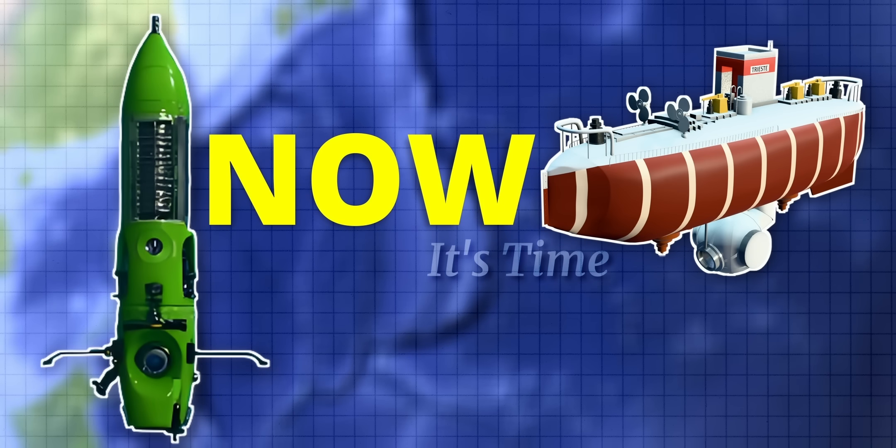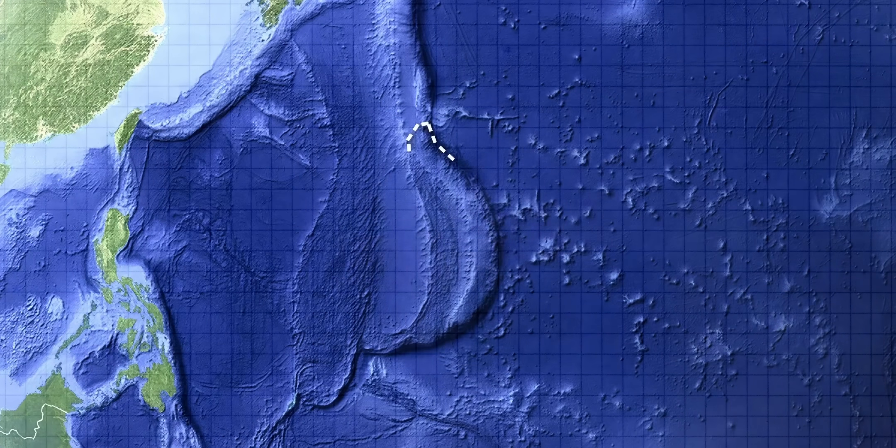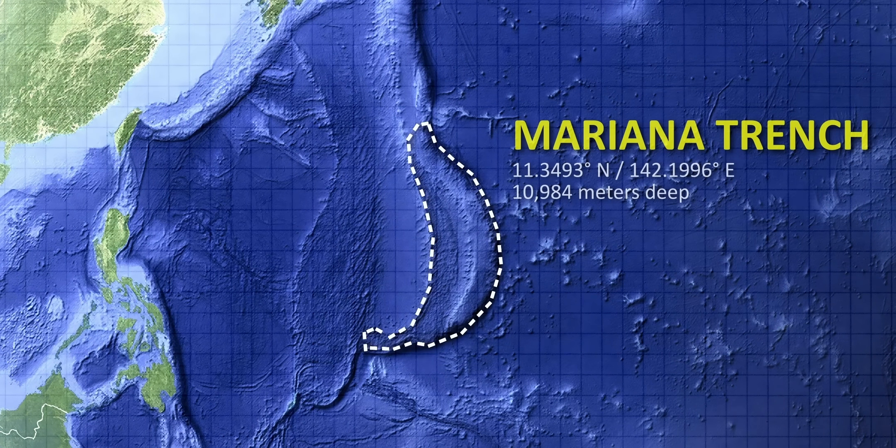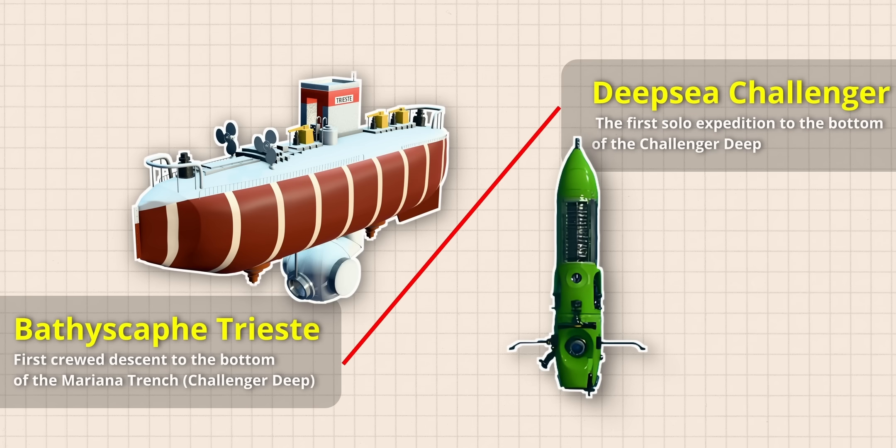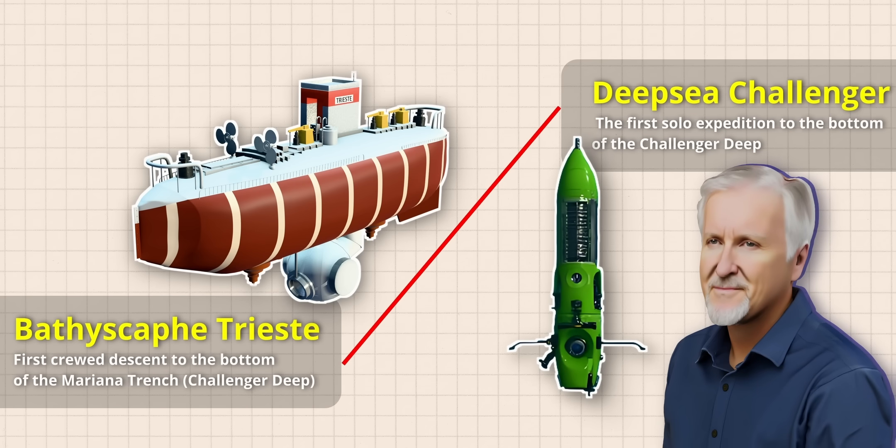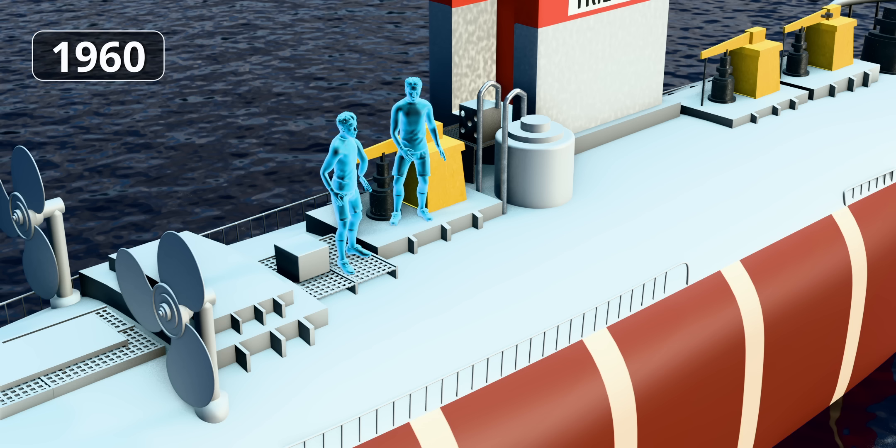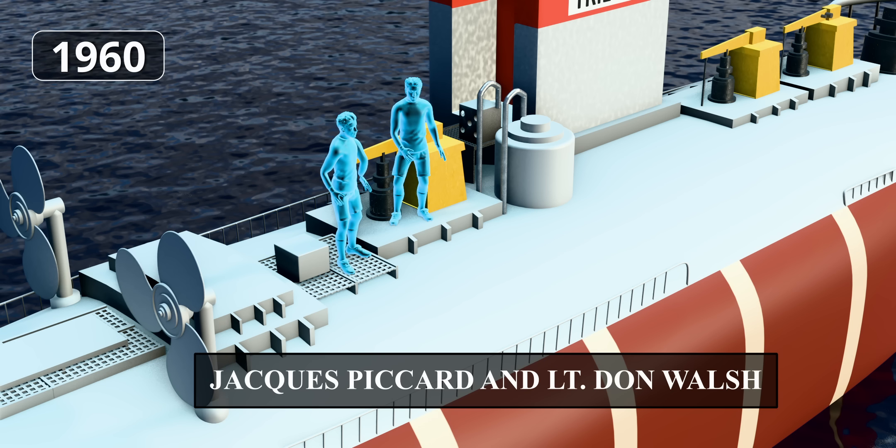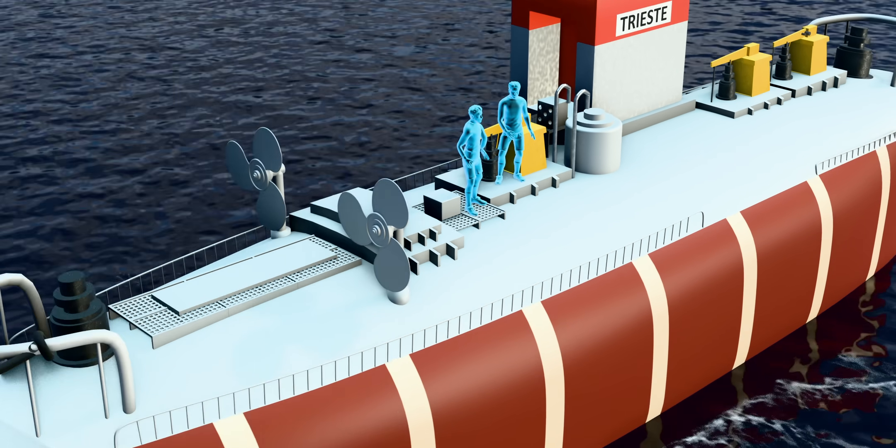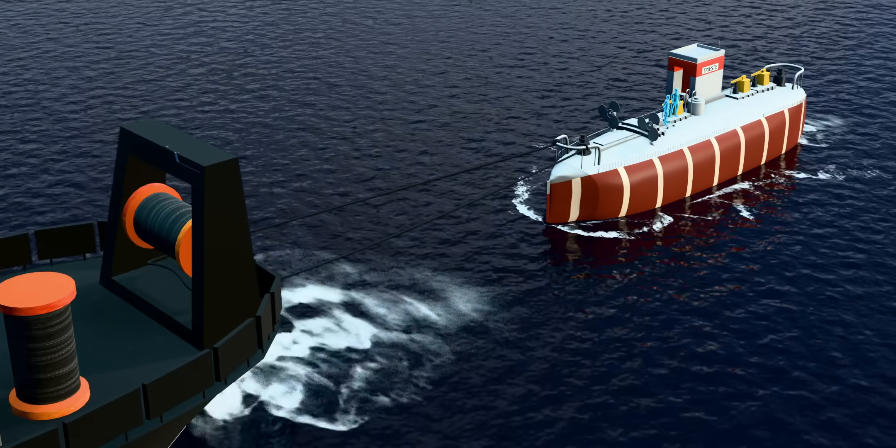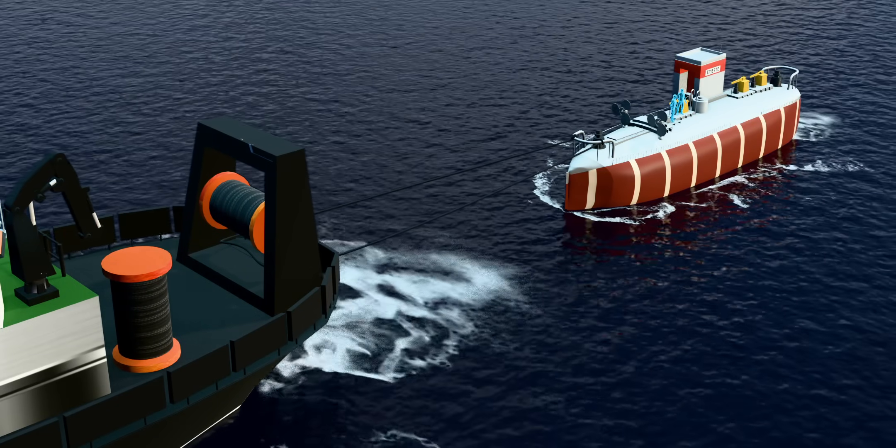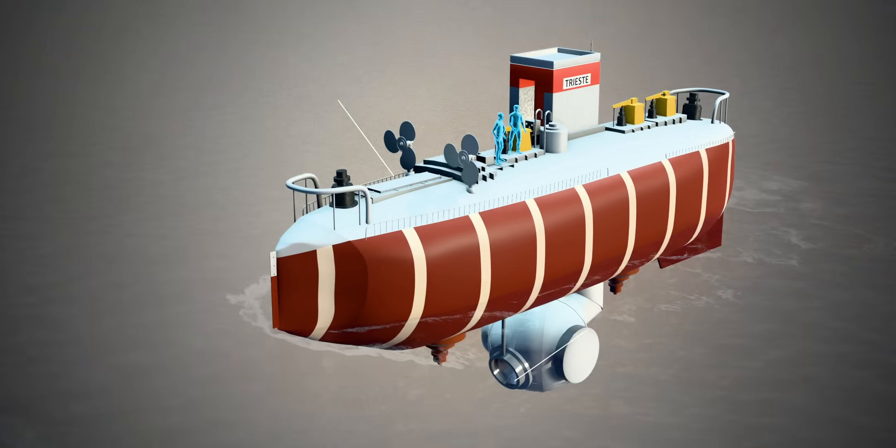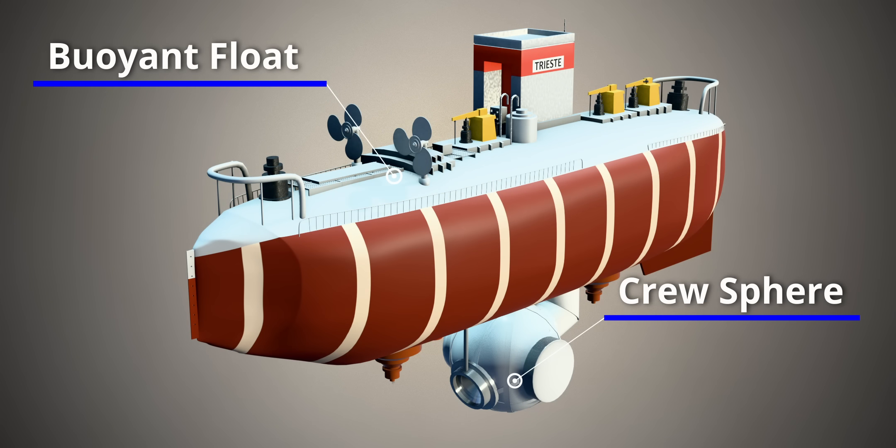Now it's time to get into an exciting phase of the video. Human expeditions to the Mariana Trench's Challenger Deep and the extreme technologies they used. The first expedition was in 1960 by Jacques Piccard and Lt. Don Walsh. They used an interesting vessel technology. It had a bathyscaf design. It had two main components, a huge buoyant float on top and a tiny cruise sphere below.